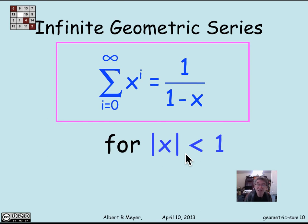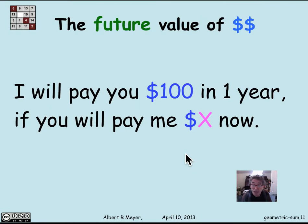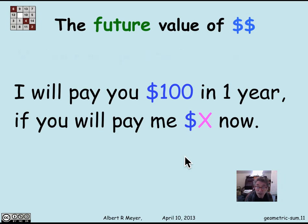That's the mathematical preliminaries of geometric sums and series. Now let's look at a typical application — the future value of money. Suppose we want to make the following deal: I promise to pay you $100 in one year if you pay me a fixed amount now. Call it x dollars. The puzzle is: how much is $100 worth if you can't have it now, only in one year? What would be a fair amount for you to pay me so that nobody loses?